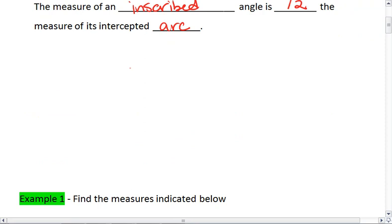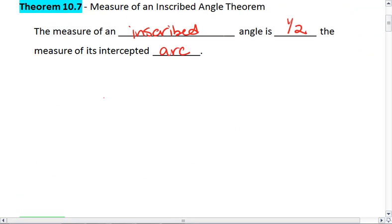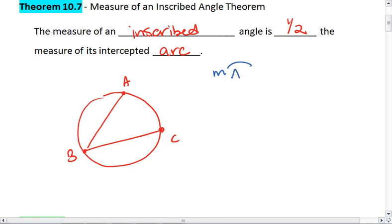So if we have a circle with our inscribed angle ABC, and say you're told that the measure of arc AC is 60 degrees, then this means that the measure of angle ABC is 30 degrees. The arc is 60, the angle is 30.